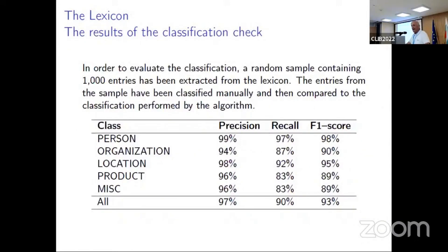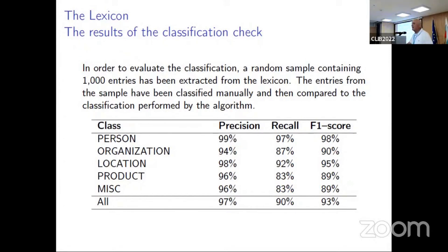I also evaluated the classification by randomly selecting 100 entries from the lexicon and manually checking the classifications against those produced by the algorithm. For precision we have approximately 97 percent, and for recall 90 percent. The recall is lower because the algorithm was adjusted to be precise rather than to gather as many named entities from Wikipedia as possible.